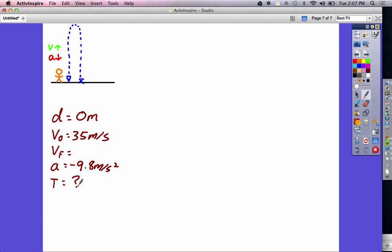From here, we would look and say, what equation does not have final velocity in it? And that's going to be the d equals v naught t plus 1 half a t squared equation. This one can get a little bit messy.